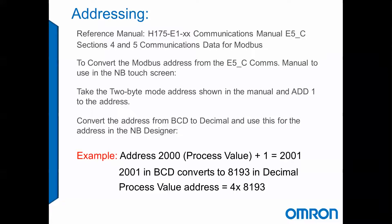For example, the process value, which is address 2000 — we're going to take 2000, add 1 to it, coming out to 2001. We then take 2001 and convert it from BCD to decimal, which equates to 8193. So our actual process value address is going to be 4x8193.